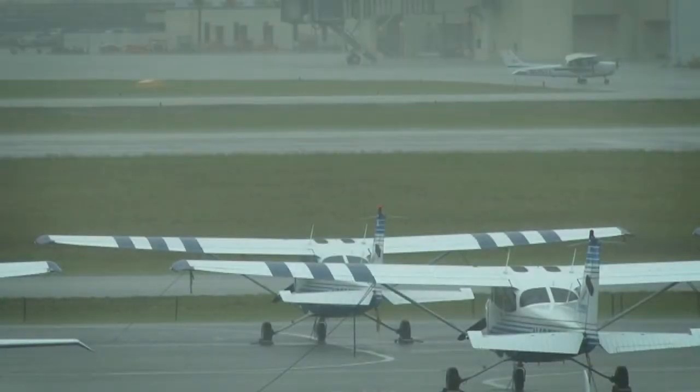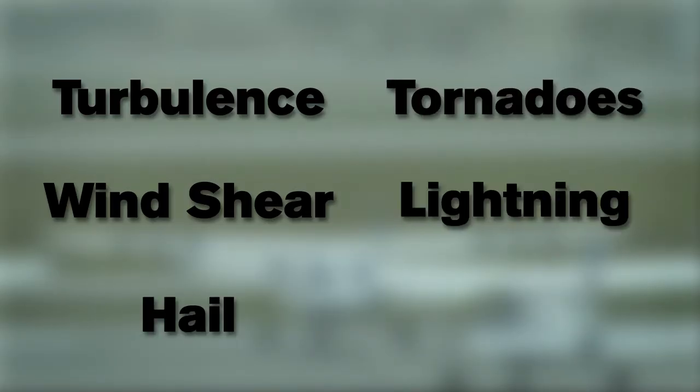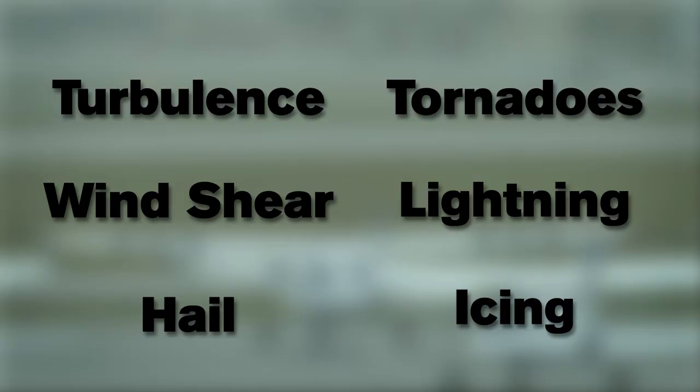Thunderstorms contain several of the biggest hazards to aircraft, including such things as turbulence, wind shear, hail, tornadoes, lightning, and icing. Some of these hazards can occur outside thunderstorms as well.